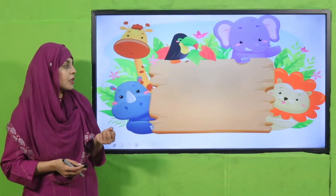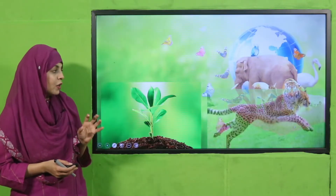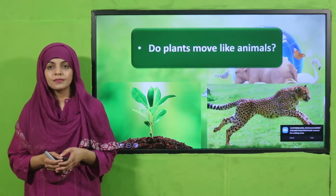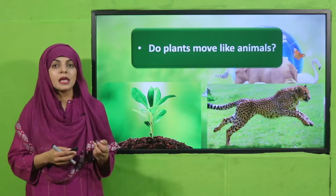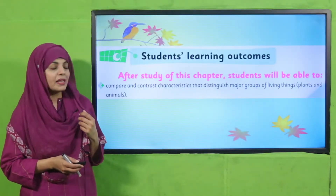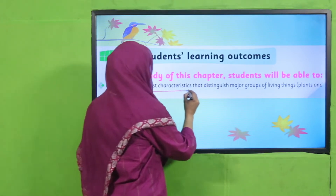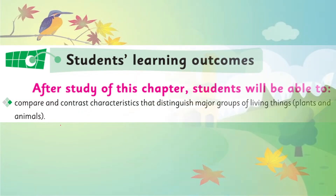Now let's move to today's activity. Look at the plant and animal and tell me: do plants move like animals? No, they do not run, jump, or walk like animals — but plants do move. In today's lecture, students will be able to compare and contrast characteristics that distinguish major groups of living things — plants and animals — and today we will discuss movement and growth.